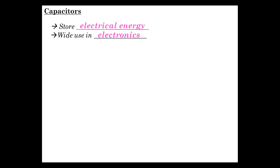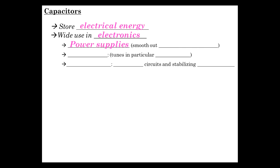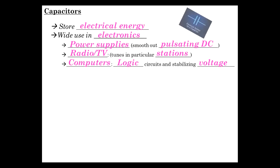They have a wide use in electronics. A few of those applications are in power supplies, where they smooth out a pulsating DC after it's converted from alternating current. Radio and television electronics. Capacitors are used to tune in particular stations and eliminate all the other ones. In computers, lots of use in computers and other general electronic circuits. Logic circuits and stabilizing the voltage in various parts of a circuit so that it functions correctly.